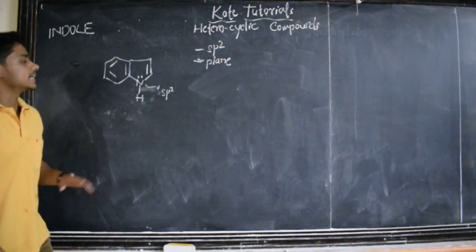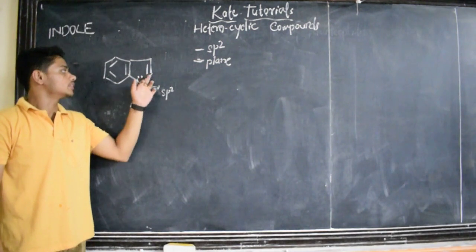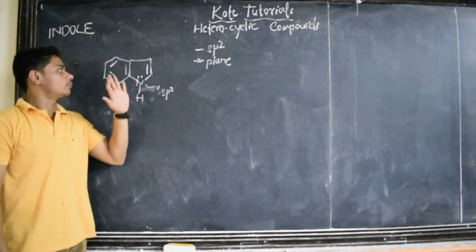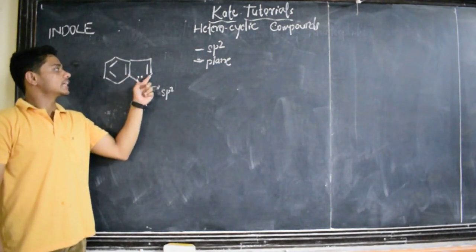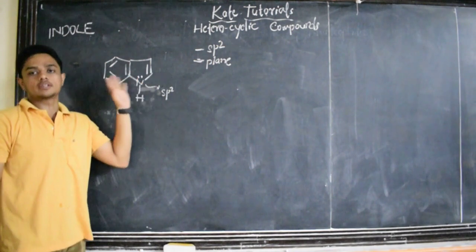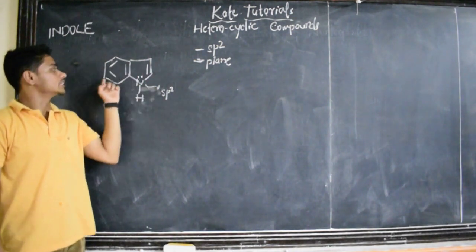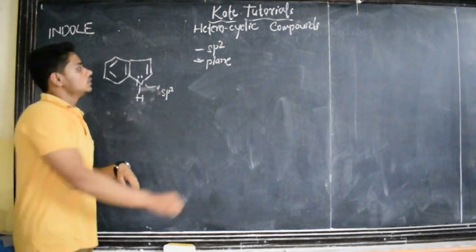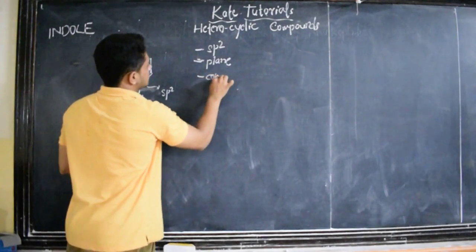And also, there is a conjugation. See: double bond, double bond, single bond, double bond, 2 pi electrons, single bond, double bond. There is a continuous conjugation throughout the ring. So there is also a conjugation.